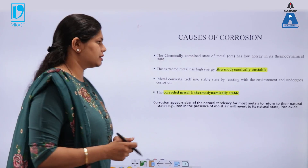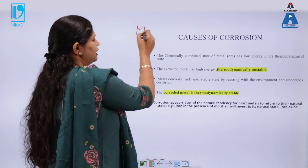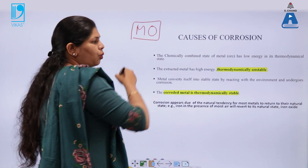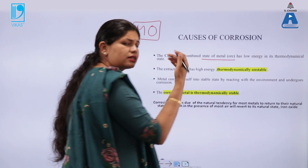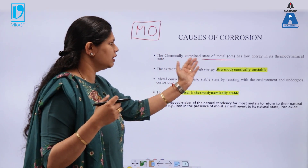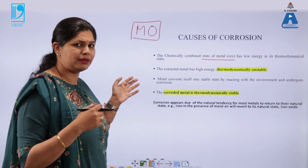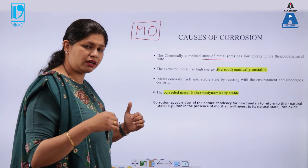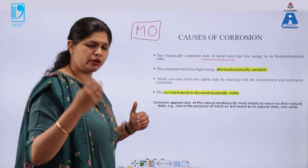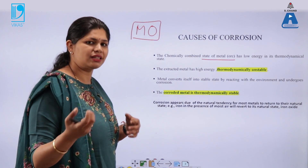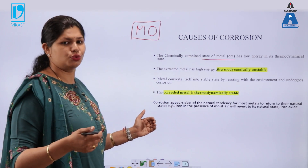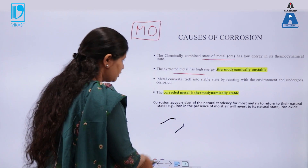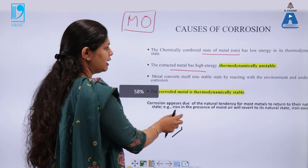Why does corrosion take place? It is because metals in their natural state are present as oxides, and these are called ores. Ores are either oxides or sulphides — their naturally occurring combined state is thermodynamically stable. So if a metal is not in a thermodynamically stable state, it gets the opportunity to react with oxygen or water to form a stable substance, and that process leads to corrosion.